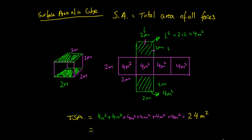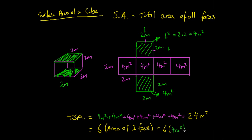Another way we could look at it — a really simple way — is we know that if all of the faces have the same area, then the total surface area is just 6 times the area of one face. So we can do 6 times 4 metres squared, which is the area of our top side, giving us 24 metres squared. That is how you work out the surface area of a cube. I'll put up some questions for you — thanks guys.